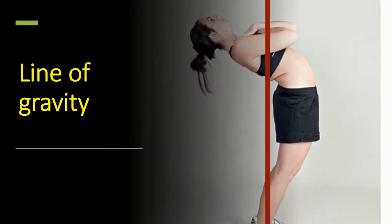Now we're going to talk about the line of gravity. The line of gravity is just a vertical line that goes through the centre of gravity.